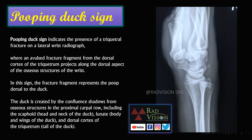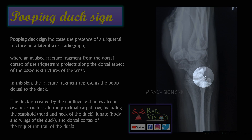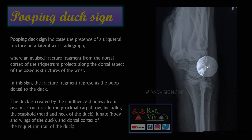This is a lateral wrist radiograph. Whenever you see a lateral wrist radiograph and suspect triquetral fracture, what are the signs we have to look for? Here you can see a fracture noted in the triquetrum with displacement of the fracture fragments dorsally. These fracture fragments displaced dorsally mimic the poop of the duck.